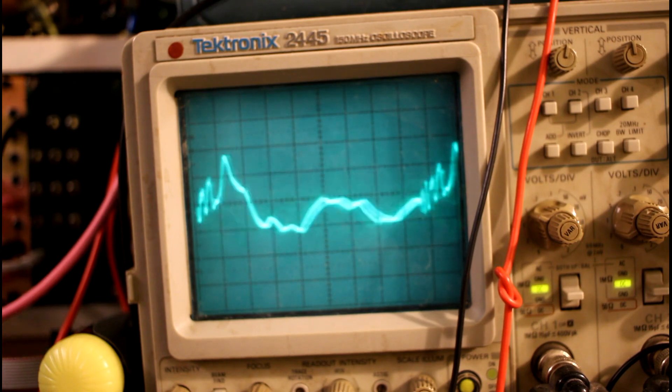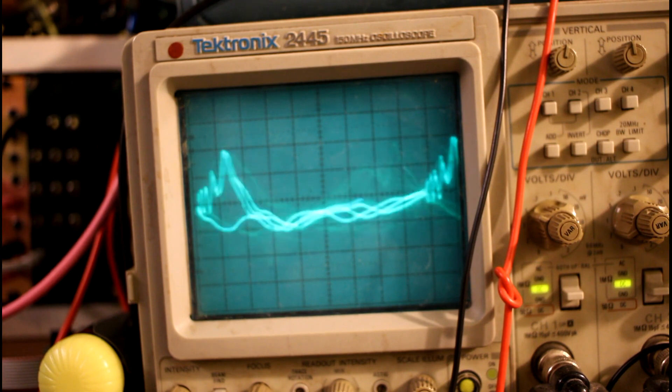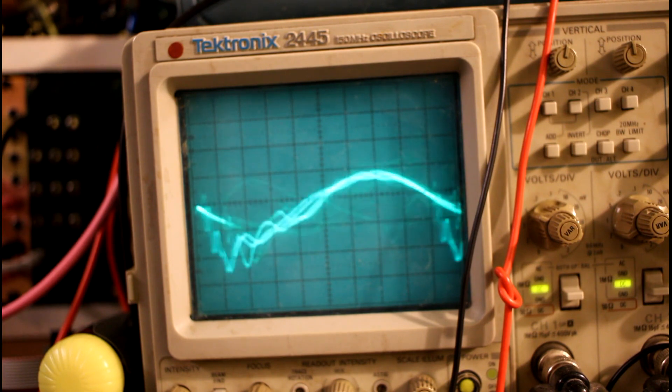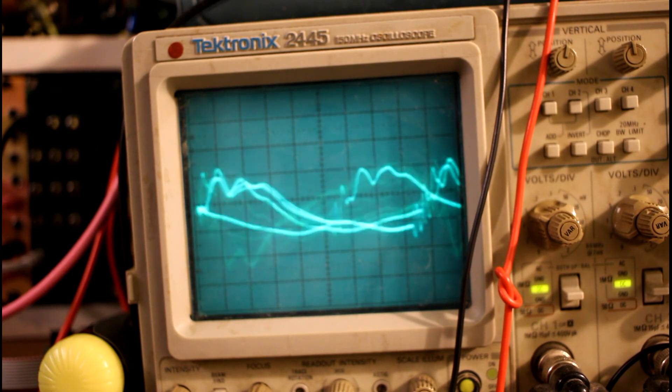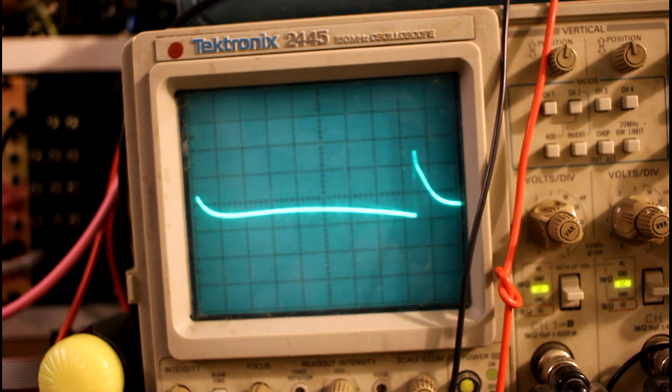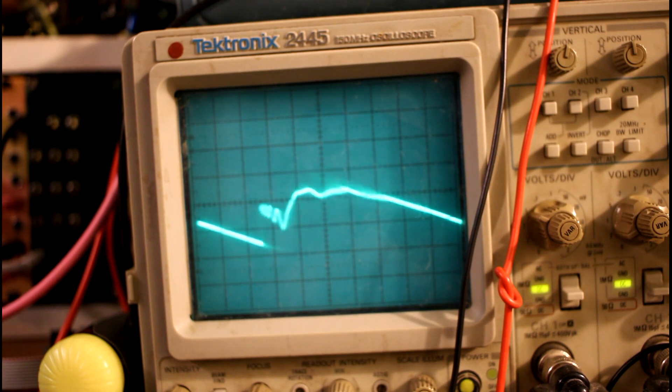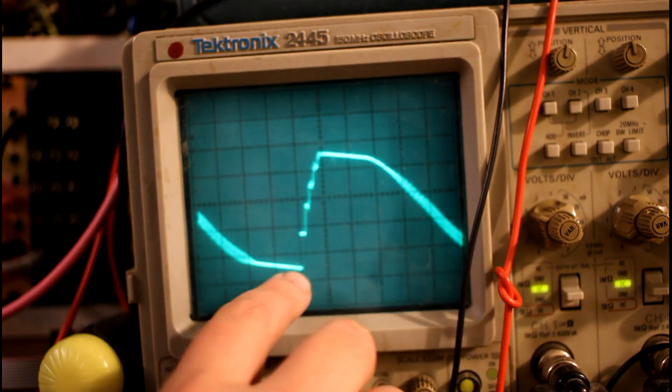But as you turn that resonance down, it just starts sounding like a regular kind of phaser sound. And right now we are looking at just the output of the filter itself. Here's the blended output. So you can see on the blended output that clipping is not as flat at the top.